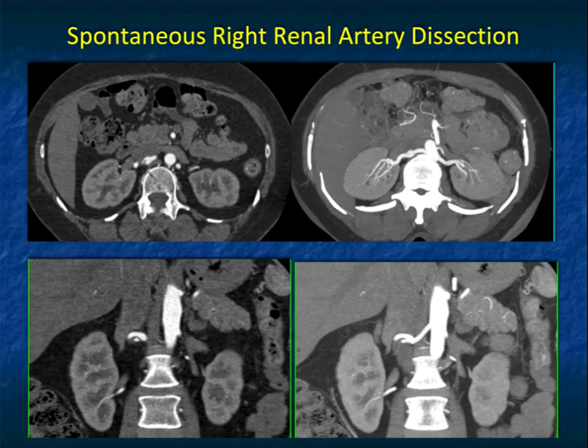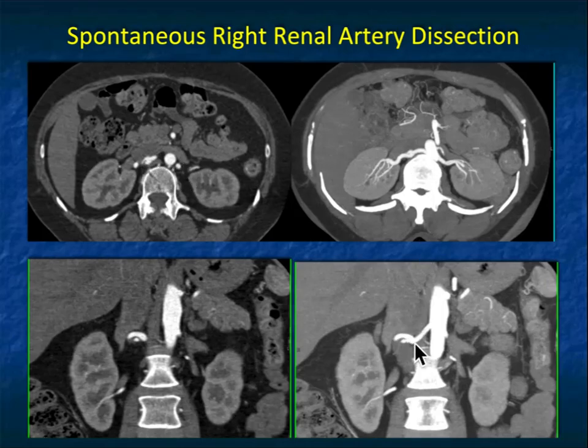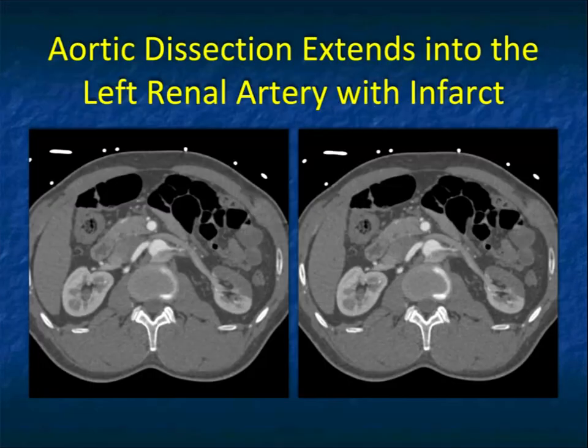Here's a nice example. Looking at the right renal artery, it's irregular — very nicely shown on the axial and the multiplanar. On the 3D imaging, you can see very nicely this focal dissection in the patient's renal artery. This was a spontaneous dissection; the patient had some flank pain.